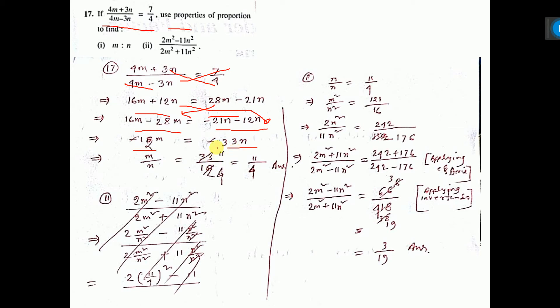Minus minus cancel, N bring down, this 12 bring down, now do cancellation. 3 into 11, 3 into 4. So 11 by 4, this is the ratio M is to N. One number done.